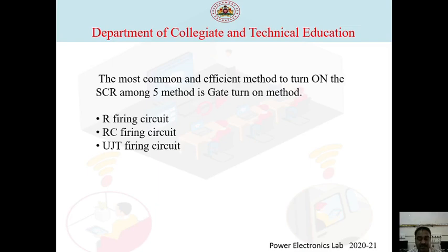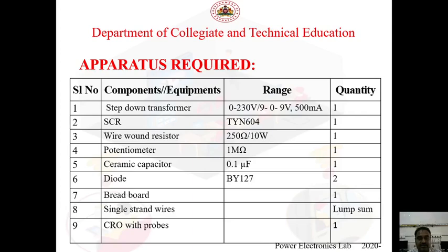By giving a positive current to the gate we can turn on the SCR, provided it should be in a forward bias condition — that is very important. In gate turn-on methods we have R firing circuits, RC firing circuits, as well as UJT firing circuits. For our experiment today I am going to discuss the RC firing circuit.